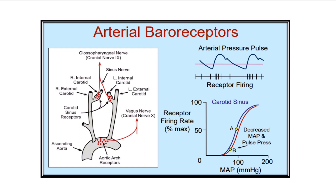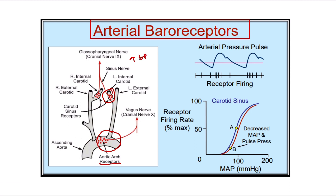The important receptors are the arterial baroreceptors — the carotid baroreceptor and the aortic baroreceptor. These are stretch receptors, meaning when blood pressure increases, the aortic and carotid baroreceptors are stimulated and they fire. But in this question there is loss of blood, which means there is decreased blood pressure, so the baroreceptors will not be activated.